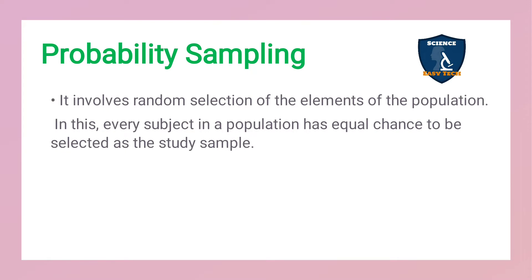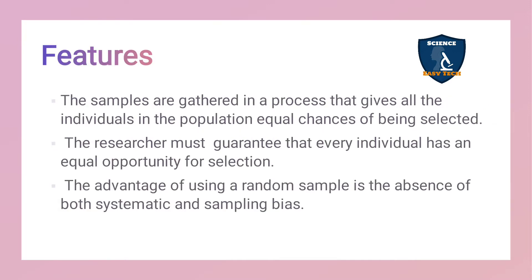The content in this video is exclusively about probability sampling. Probability means chance — so everyone has a chance to get into the study. Probability requires random selection of elements of the population, where every subject in your population has an equal chance to be selected as a study sample. For example, when tossing a coin, the probability of getting heads or tails is the same.